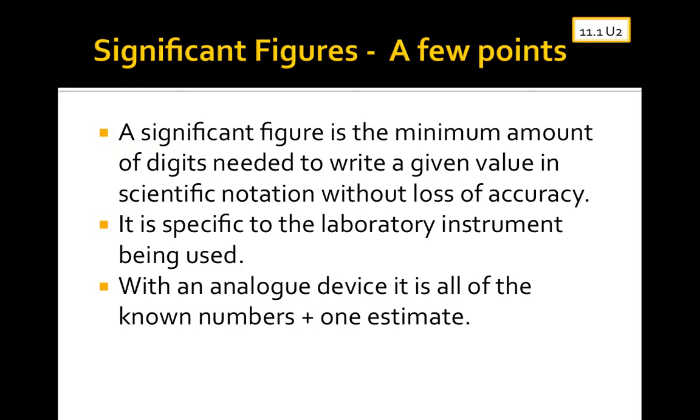With an analog device, it's going to be all of my known numbers plus one estimate. This is an example of an analog device, my graduated cylinder. It's the opposite of digital. What I want is to know what volume of water in milliliters I have. We're going to get up, take your packet with you. You're going to look at the bottom of the meniscus and write down what value you would write down in your lab manual.